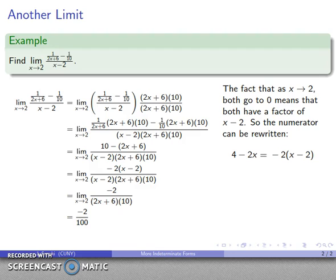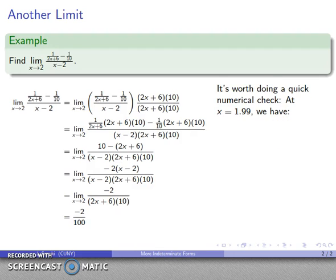Now, we've done a lot of algebra, and if it's possible, it's almost always worth doing a little bit of a numerical check. And so as x gets close to 2, I'm going to look at an x value close to 2, and I claim that this thing should be close to minus 2 over 100. Well, let's check it out. At x equals 1.99, I'll substitute those in, I'll evaluate, and after all the dust settles, we get negative 0.0200, approximately, and that is fairly close to our limit.